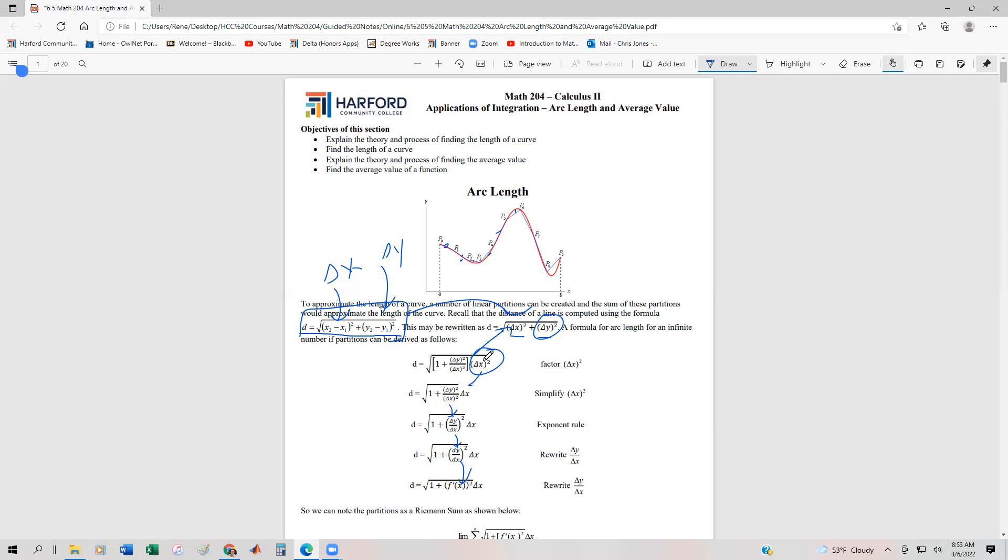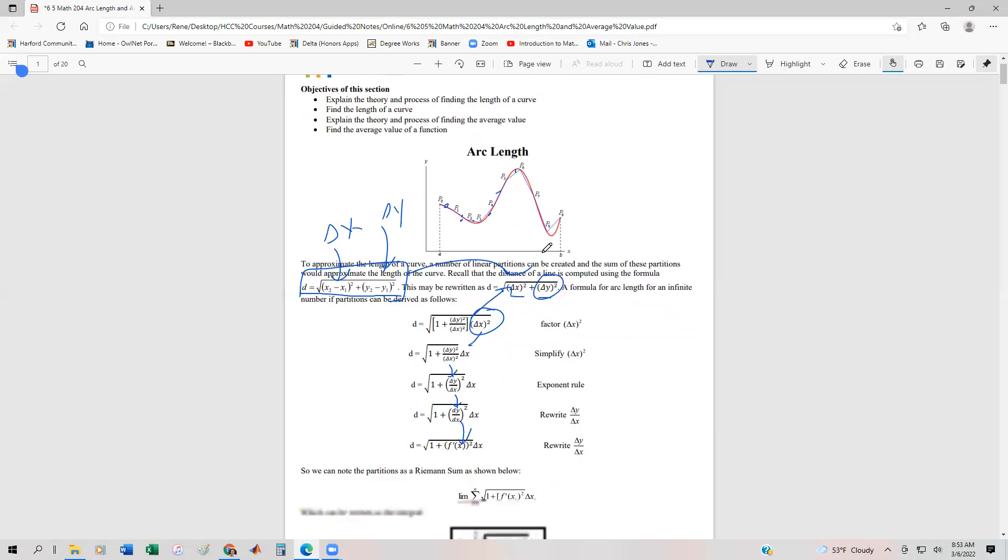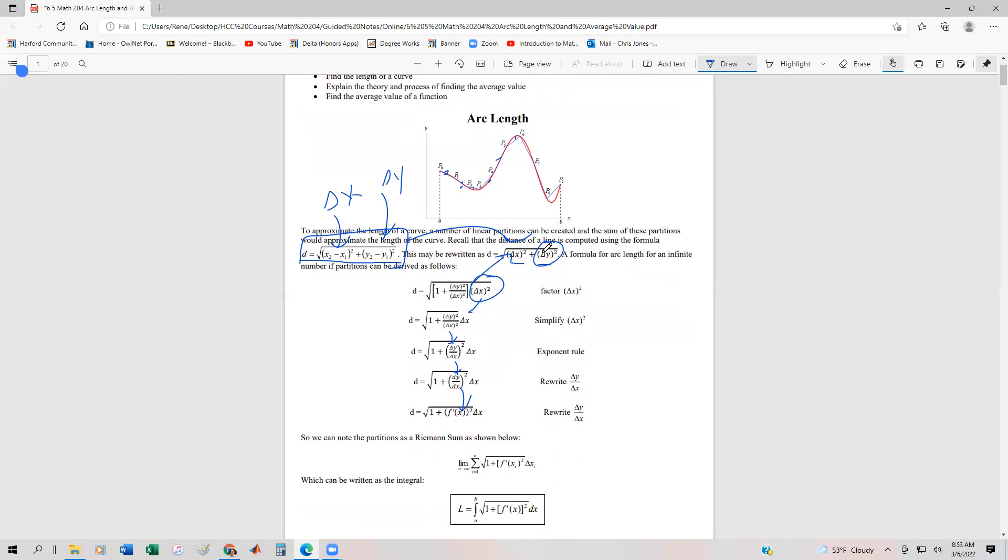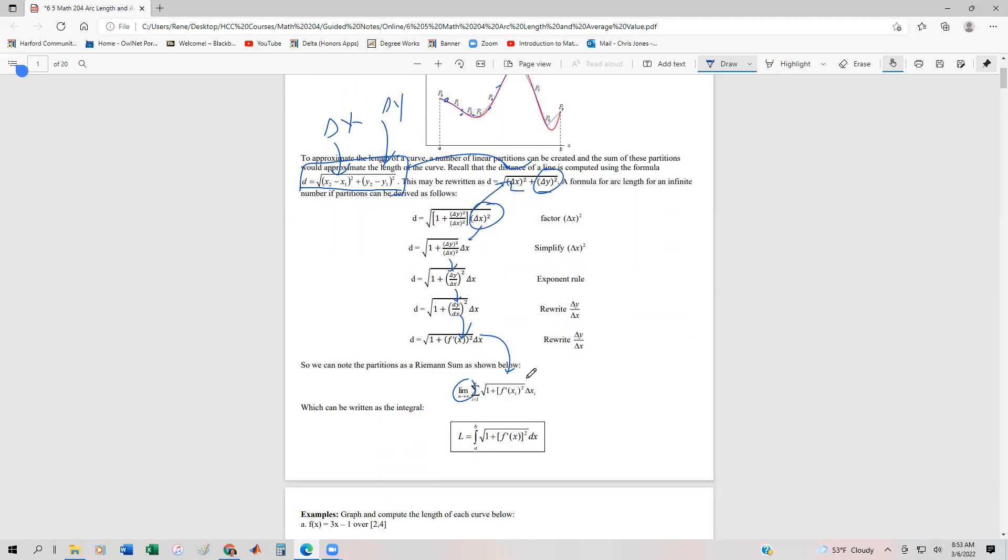Of course, like we said, we'd like to take an infinitesimal number of these partitions. And so from there, what we could do is we could just add those up as the limit of the number of partitions goes towards infinity. And finally, what we could do is we could rewrite that as an integral. So the length would be equal to the integral from a to b square root of 1 plus f prime x squared dx.